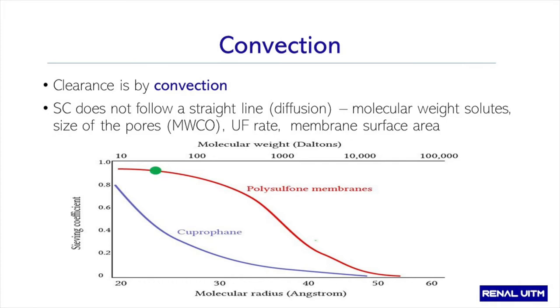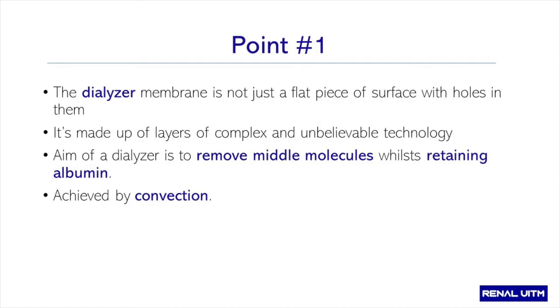The permeability of solutes does not only depend on molecular weight, but also the size of the pores, ultrafiltration rate, and membrane surface area. This graph shows two things: as the molecule becomes bigger, the less it is cleared. You can see the difference between the cellulose and the new synthetic ones — the new synthetic follows a nice S-curve which resembles the glomerular basement membrane.